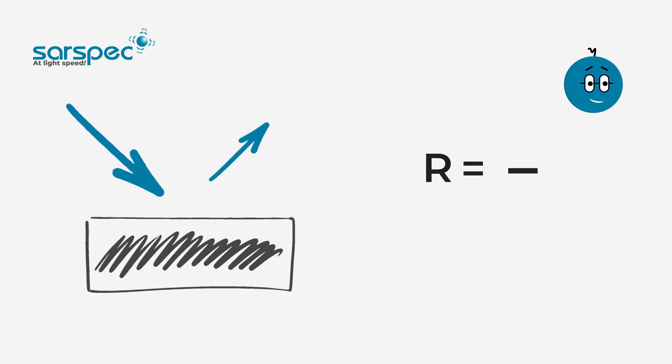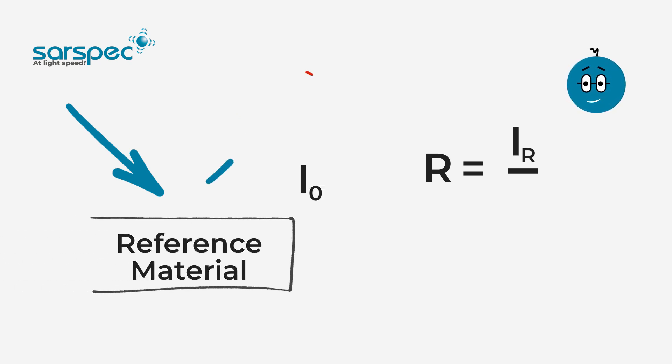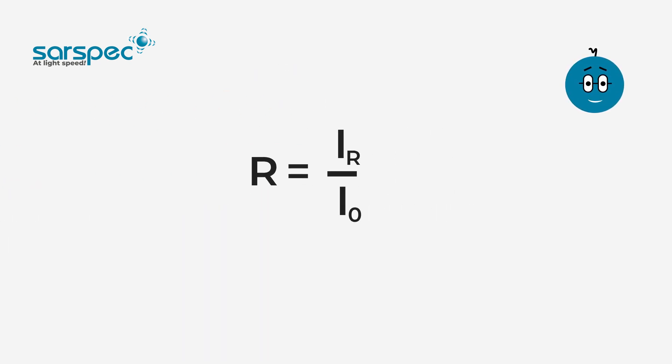Reflectance corresponds to the amount of light that is reflected by your sample when compared to a reference material. That will give you the fraction of light that is reflected, in this case the percentage.